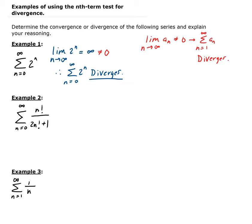The next one: we have the summation of n factorial all divided by 2n factorial plus 1, going from n equals 0 to infinity. So we're going to take the limit of the nth term — the limit of n factorial over 2n factorial plus 1.